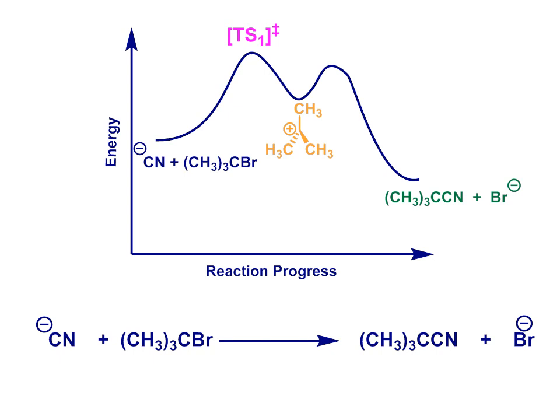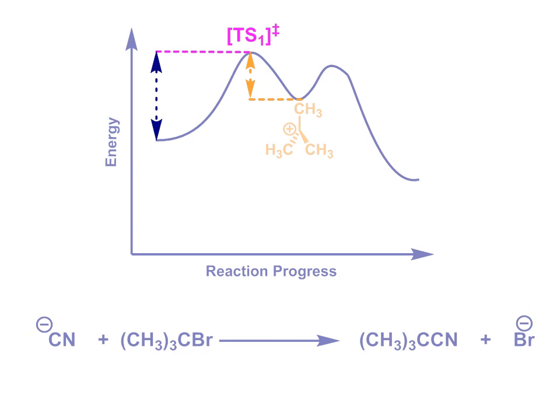For example, going back to this SN1 reaction and thinking about the first transition state, TS1. Our energy profile shows us that the closest observable species in energy to this transition state is the intermediate carbocation in orange. Compare this energy gap in orange to this one in blue. So Hammond's postulate allows us to say that TS1 will look quite a bit like the carbocation, and certainly more like the carbocation than it looks like the starting material.